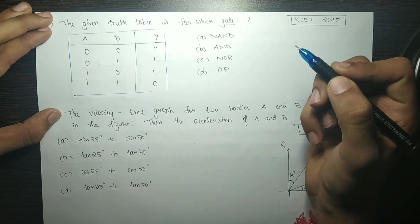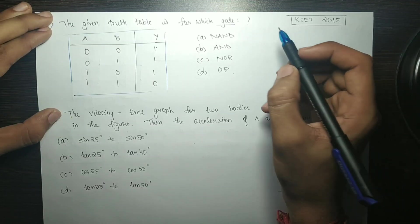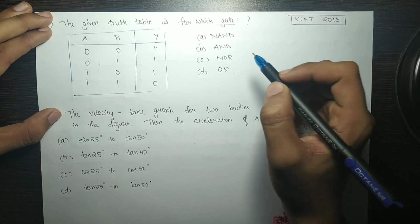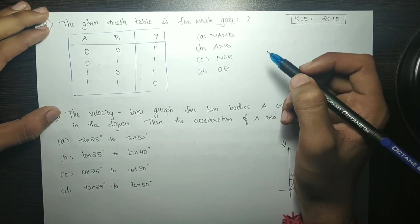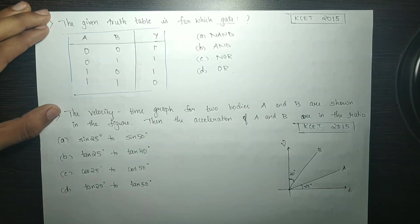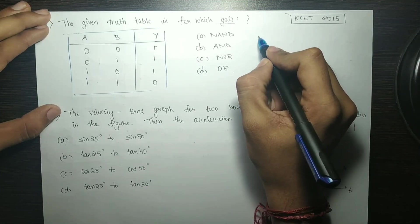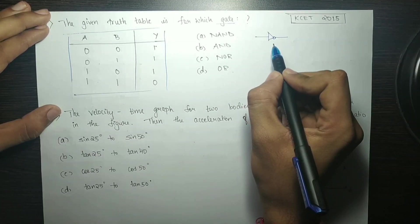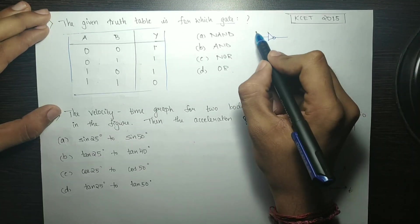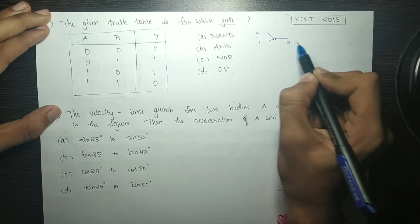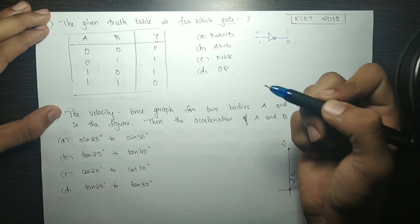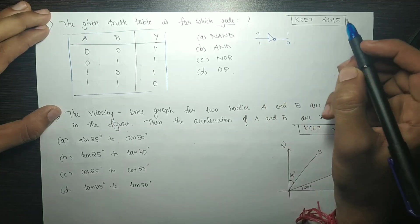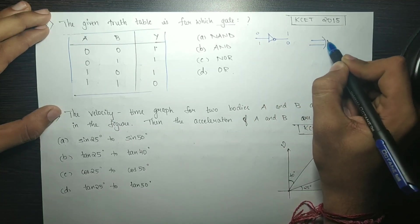If you are an electronics student, you have an advantage because you already know this. First, here is the NOT gate. The NOT gate inverts the signal — 0 becomes 1, and 1 becomes 0. This is single input and single output. That means we have an OR gate here.